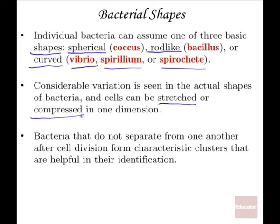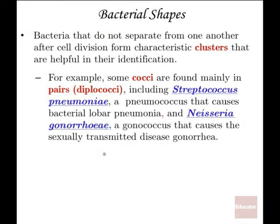The way bacteria cluster together relates to how they engage in cell division. They can form clusters or chains based on their division pattern. Some cocci, when dividing, are always found in pairs — those are diplococci. Examples include Streptococcus pneumoniae, which causes pneumonia, and Neisseria gonorrhea, the gonococcus. We'll be discussing these groups of bacteria frequently in other lectures.